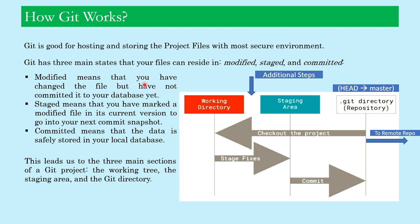Modified means you have changed the file but have not committed it to your database yet. Staged means you have marked a modified file in its current version to go into your next commit snapshot. And finally, committed means the data is safely stored in your local database permanently. This leads us to the three main sections of a Git project: the working tree, the staging area, and the Git directory.